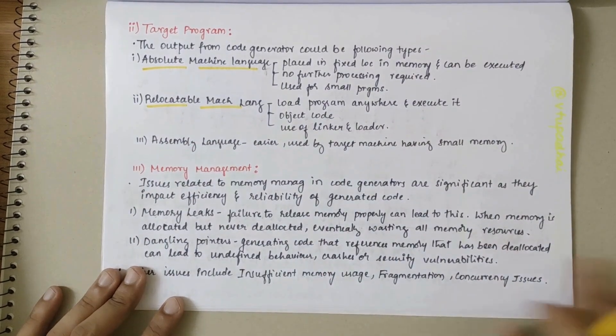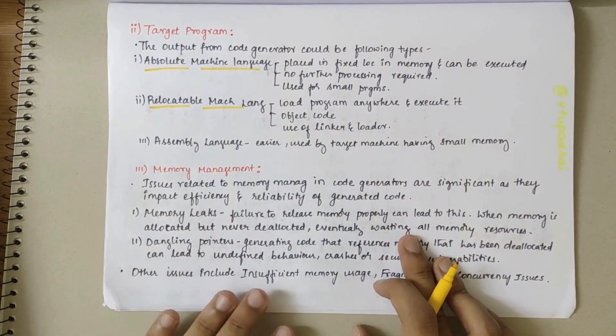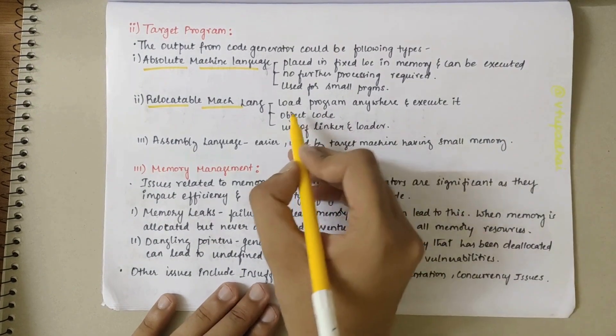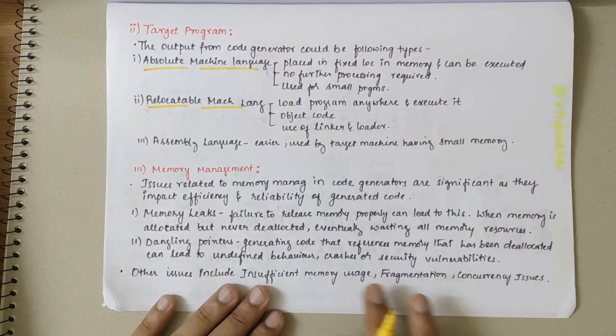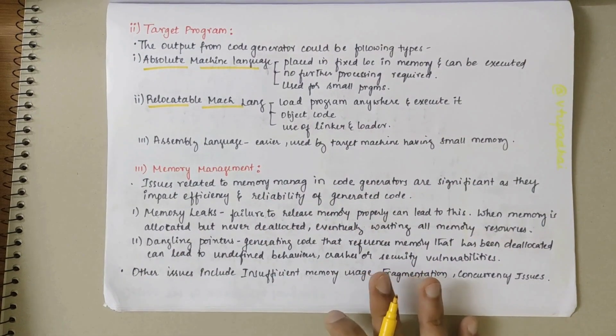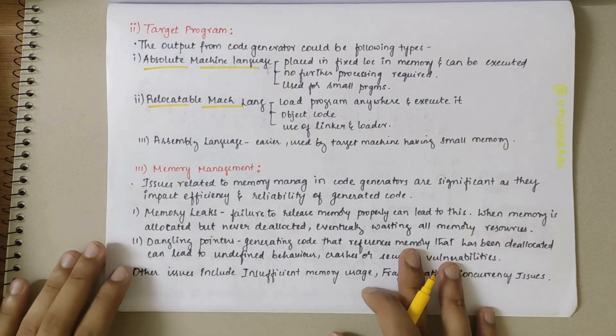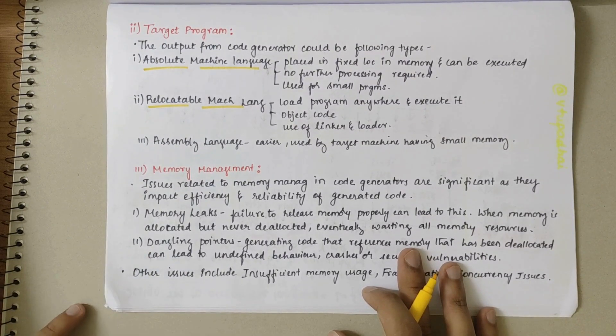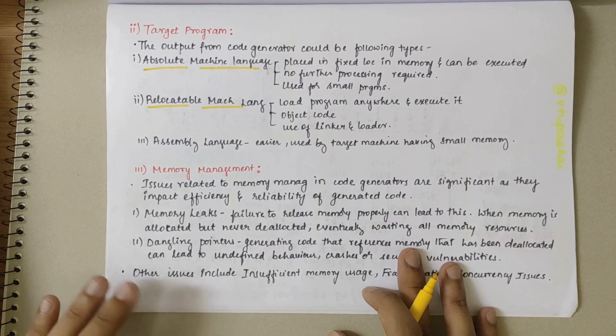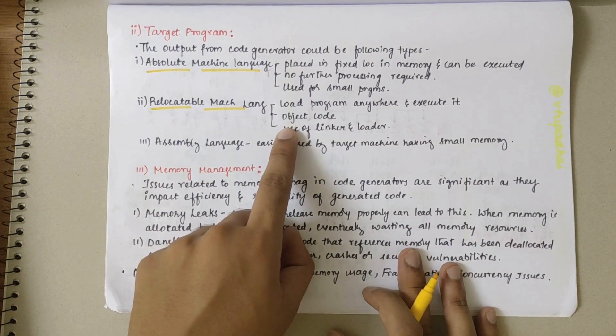Then we have relocatable machine code - you can load the program anywhere and execute it. It comprises of object codes. Here we make use of linker and loader. When we talk about linker and loader, it requires extra space and memory. While designing a code generator, we make sure that the space is less and the memory occupied is less and the speed is more.